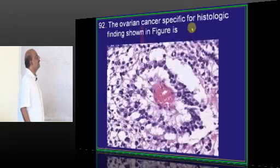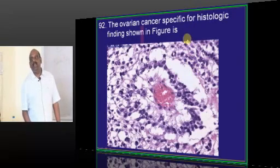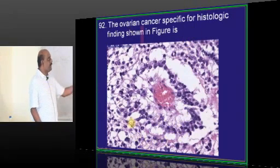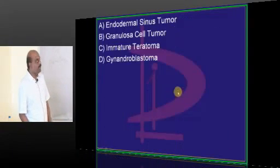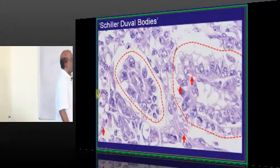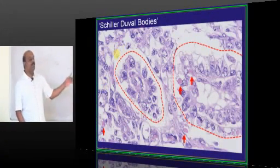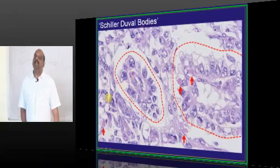An ovarian cancer is being shown and a histological finding is being shown. Those darkly staining bodies are called Schiller-Duval bodies. Schiller-Duval bodies are the ones which you typically see in case of endodermal sinus tumor among the ovarian cancers.